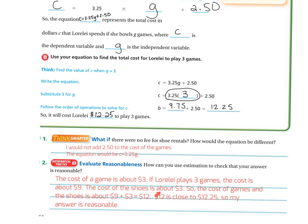The cost of the shoes is about $3. So the cost of the games and the shoes would be $9 plus $3, which is $12. So $12 is close to $12.25, so the answer is reasonable.